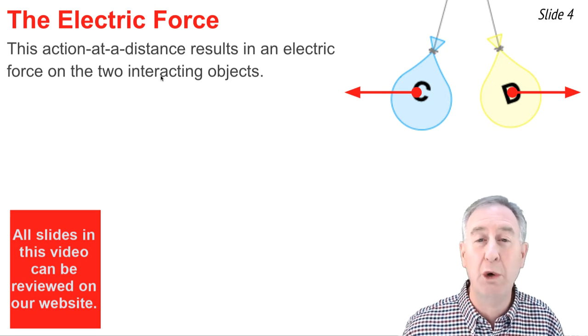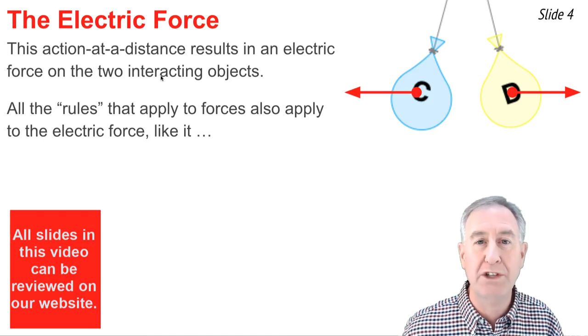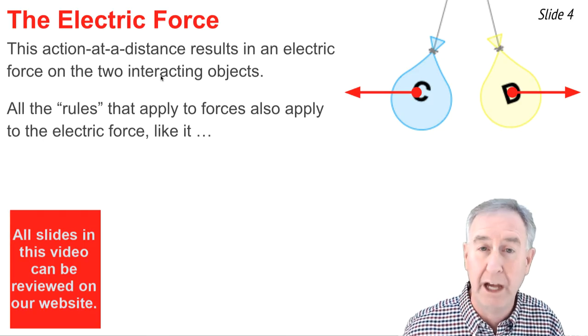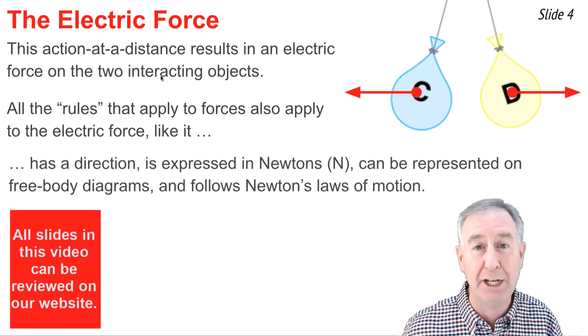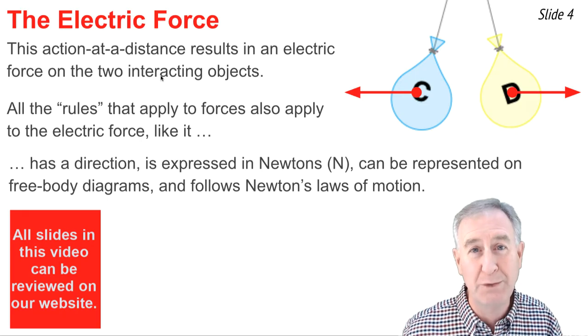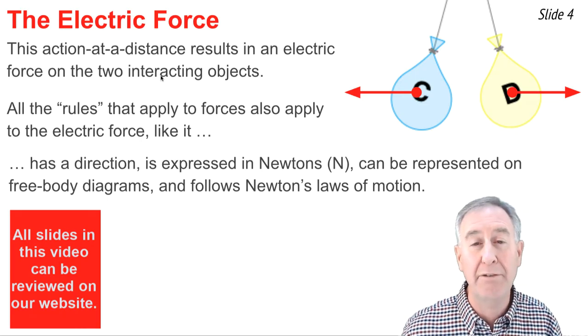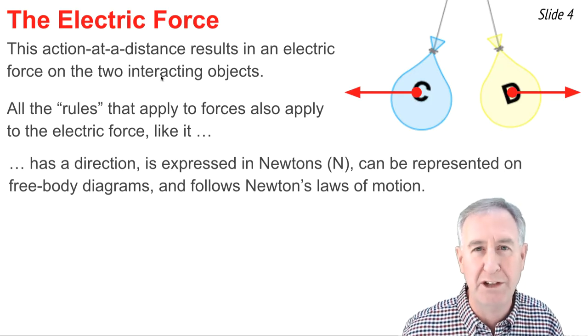An action at a distance always results in two forces, one on each of the interacting objects. We call these forces electric forces. And like any force, they're subject to all the rules that apply to forces, like the idea that they're vectors and they have a magnitude and direction. Their magnitude is expressed in units of Newtons.